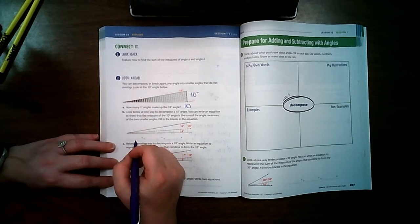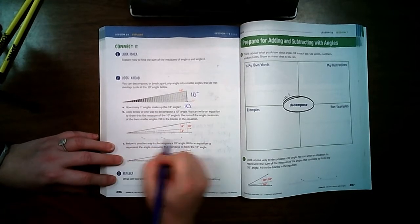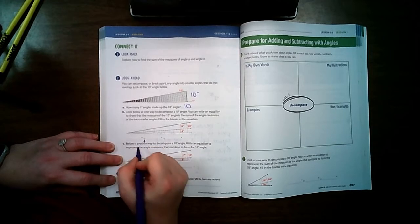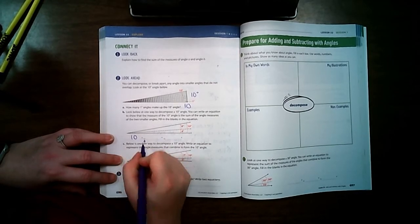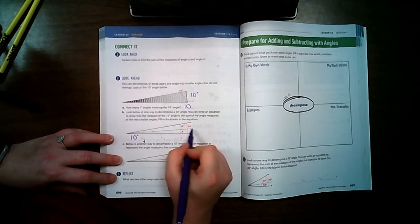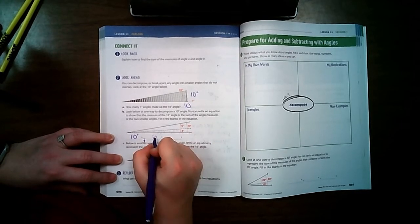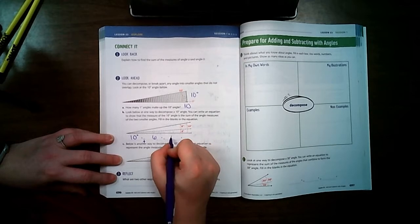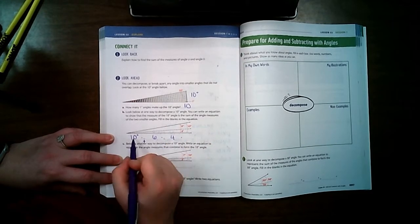Down here, it's wanting us to write an equation. Notice that the equal sign is here. So I know that altogether my angle is 10 degrees and over here they've broken it apart. One of them is 6 degrees and the other one is 4 degrees. 6 plus 4 equals 10.